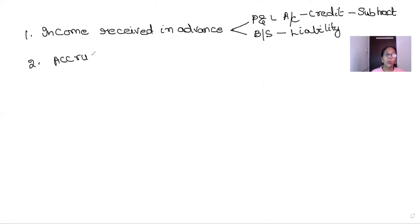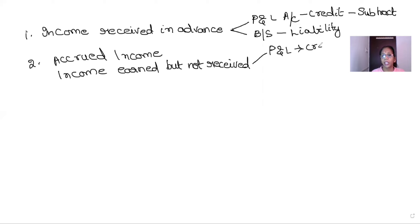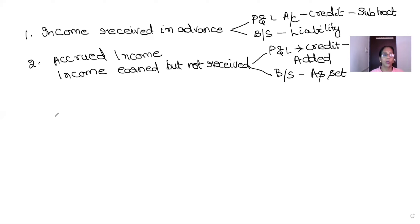Next is accrued income — income earned but not received. You have worked for the third party but they have not yet paid you. Since it belongs to this year, it should be added to the respective income on the credit side of the P&L account. In the balance sheet, this money will be shown as an asset because you are still to receive it.